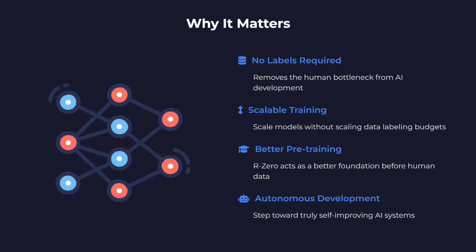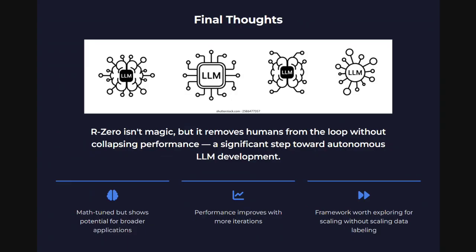R0 acts as a better foundation before human data, and it autonomously improves models. Final thoughts: it's not magic, but it removes humans from the loop, which is very important. Given how fast generative AI is expanding, this is a critical step. The framework has given great results for mathematics so far, but more results should be coming. The idea is quite interesting — do try reading the paper from Tencent. I hope you enjoyed this short video, thank you so much.